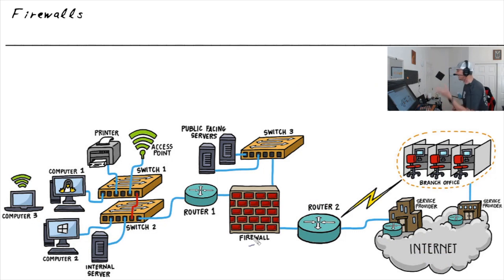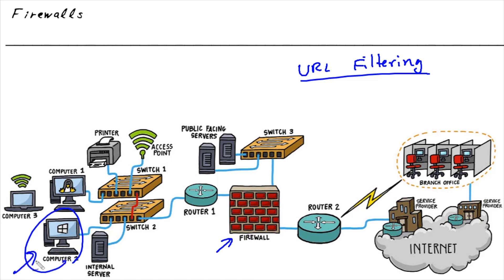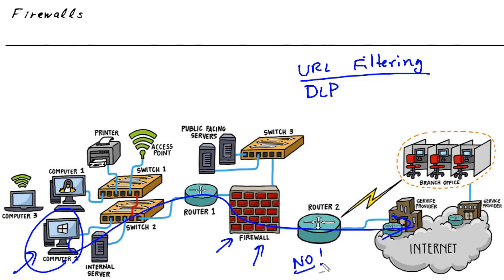When it comes to features we want the firewall to provide, we want more and more — and some of those additional features include URL filtering. From a company level, we can control the websites that Bob is able to reach. Because the traffic goes through the firewall, it can say yes to certain websites and no to others. We may also have sensitive data like social security numbers and credit card numbers that we don't want leaked out. Another feature firewalls can offer is DLP — Data Loss Prevention. If the firewall sees traffic that looks like credit card or social security numbers, it can drop that traffic to prevent it from being exfiltrated, or leaked out of the network.